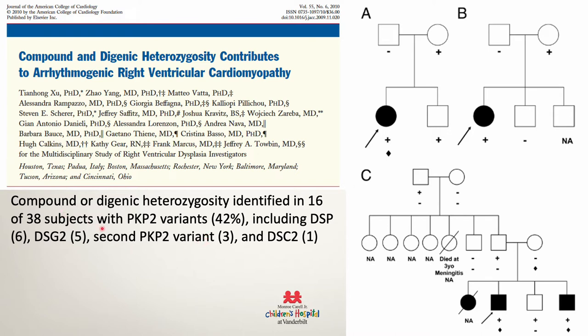So either compound heterozygosity, if it was two PKP2 variants, or digenic heterozygosity. This would explain the finding in some families where affected individuals actually had to have two mutations to manifest the disease — here's an individual with one variant, no disease; here's an individual with another variant, no disease. And so this explained some of the incomplete penetrance observed in ARVC. We have an example of two genes here, back in 2010.